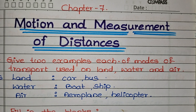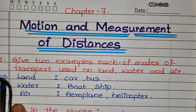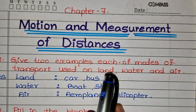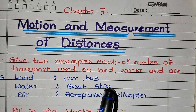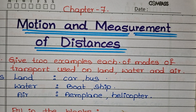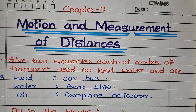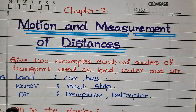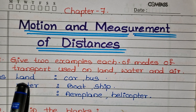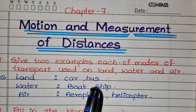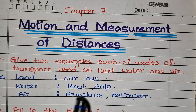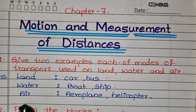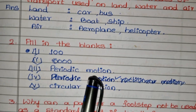The first question is: give two examples each of modes of transport used on land, water, and air. Land: car, bus, auto, train. Water: boat, ship. Air: aeroplane, helicopter.